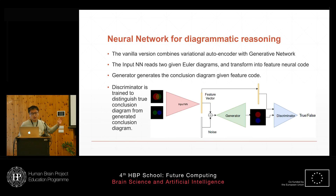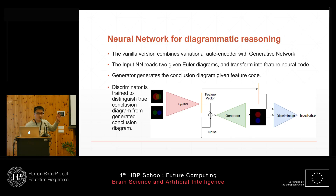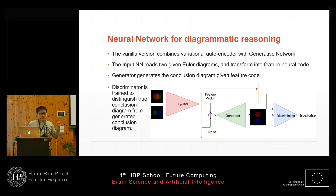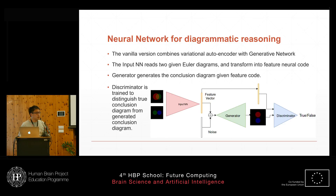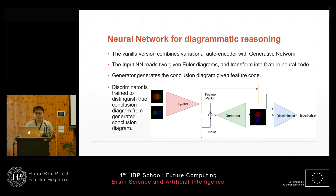I'll first introduce you to the neural network for diagrammatic reasoning. It uses the popular encoder-decoder architecture, where the encoder takes two diagrams representing two premises in the syllogism, and the architecture generates a diagram representing the conclusion. This training combines a variational autoencoder and a generative adversarial network training objective. If you want to know more about this training objective, you can talk to me at my poster.